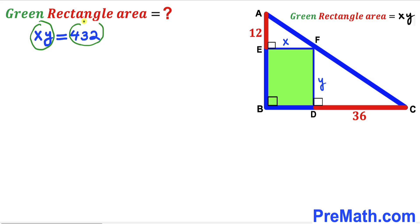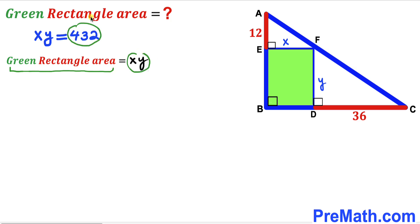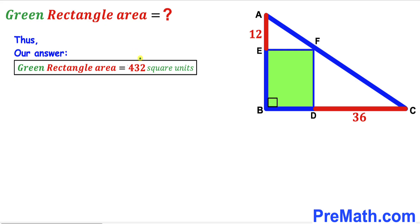Let's make an observation. We can see that our green shaded rectangle area is X times Y, and our X times Y value is 432. Therefore we conclude that our green shaded rectangle area is going to be 432 square units. Thus the area of this green shaded rectangle turns out to be 432 square units.